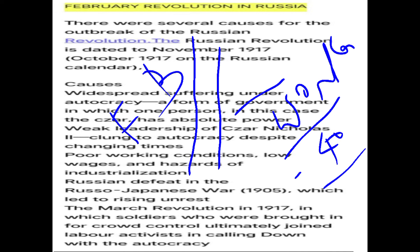When workers of the Putilov Iron Factory were dismissed, they crossed River Neva to reach the Winter Palace to ask for justice. The Czar's troops and Cossacks (soldiers on horses) confronted them. On February 22nd, when women were dismissed from the factory — that day is International Women's Day — they were joined by workers from almost 50 factories. When they asked for justice, the troops attacked them and the workers dispersed.